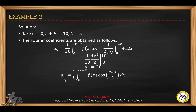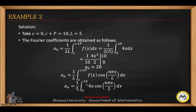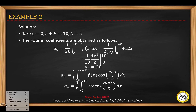For a sub n, that is 1 over l from c to c plus b of f(x) cosine(nπx/l) dx. Substituting the value of l gives 1 over 5, with the limit from 0 to 10, f(x) is 4x, and l is 5, so we have cosine(nπx/5). We will integrate this using integration by parts.